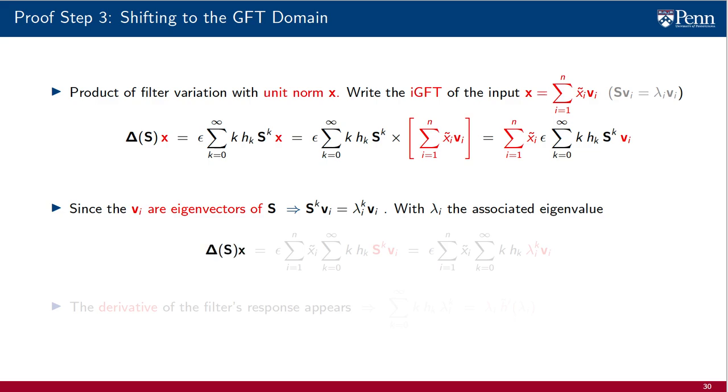Using this fact, the product ΔS times x, which contains terms of the form S to the power of k times vᵢ, can be rewritten in a form that involves terms of the form λᵢ to the k times vᵢ. The shift operator is replaced by an eigenvalue.